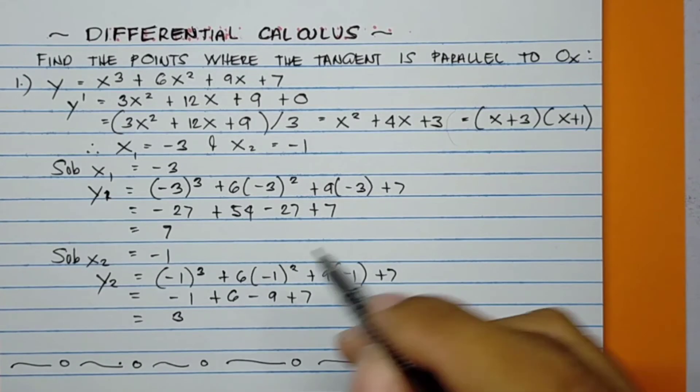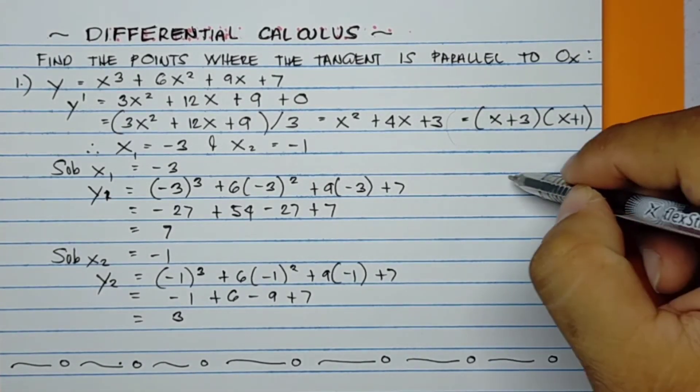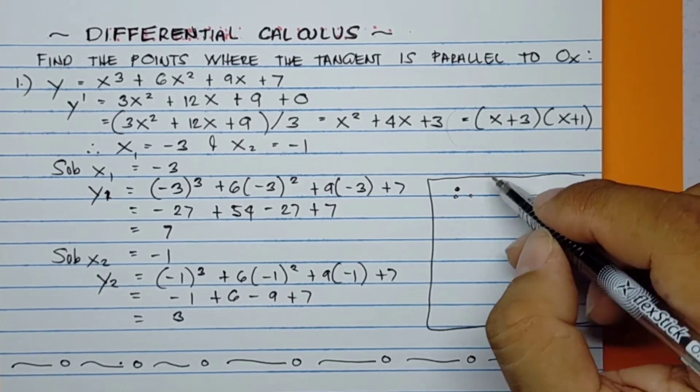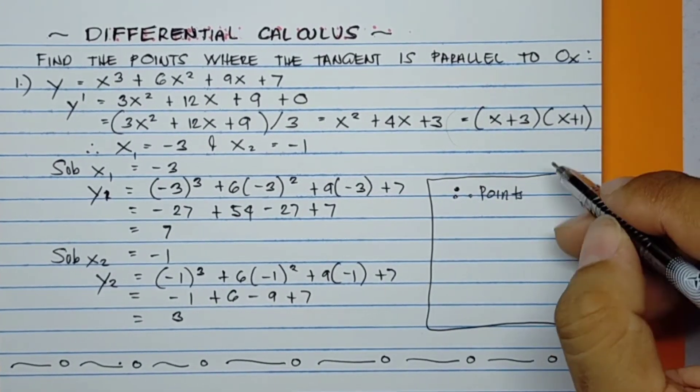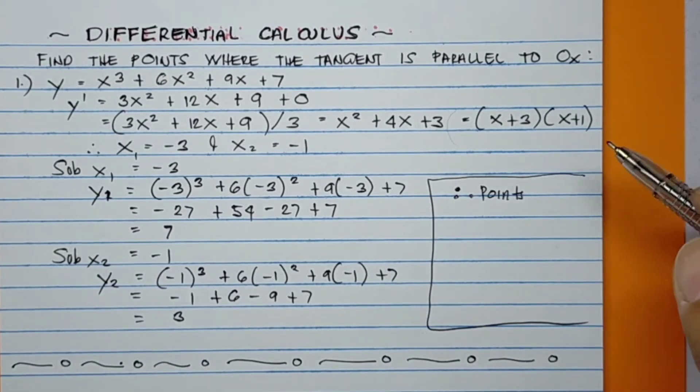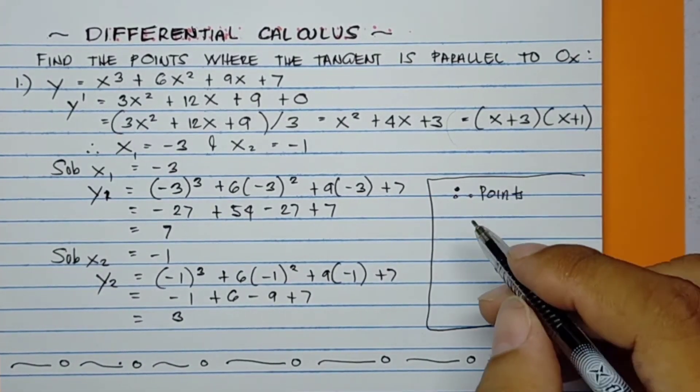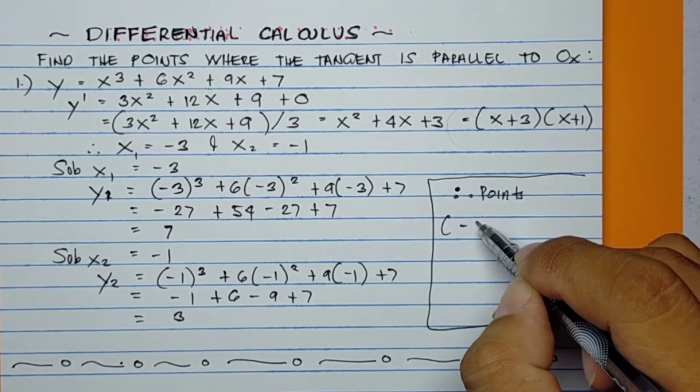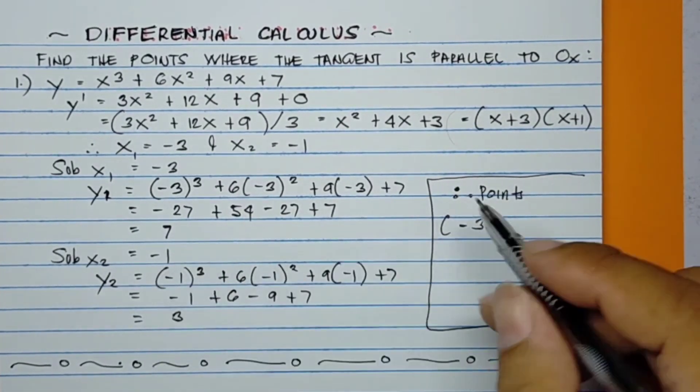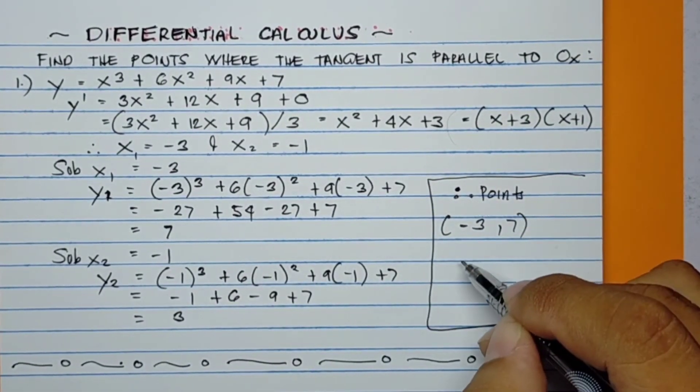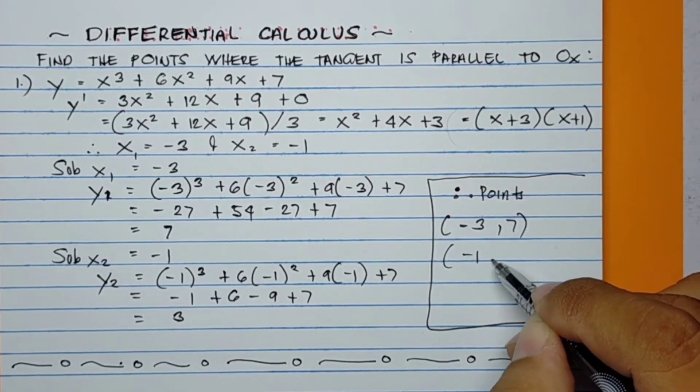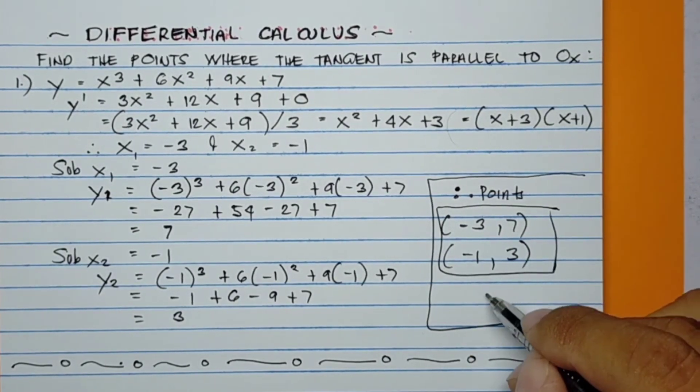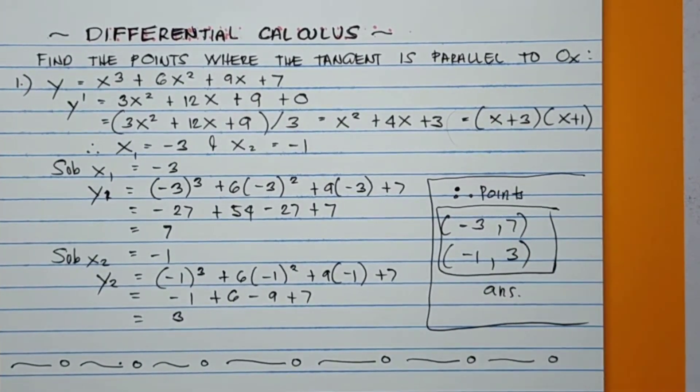Therefore, the points where the tangent is parallel to 0x are: x₁ = -3, y₁ = 7, which is the point (-3, 7), and the other is (-1, 3). So these are the answers.